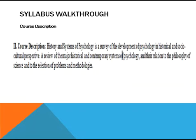The course description. History and Systems of Psychology is a survey of the development of psychology in historical and social-cultural perspective. It is a review of the major historical and contemporary systems of psychology and their relationship to the philosophy of science and to the selection of problems and methodologies. We are going to go way back into our history to look at the roots and foundations of psychology, particularly when it comes to the areas of philosophy.